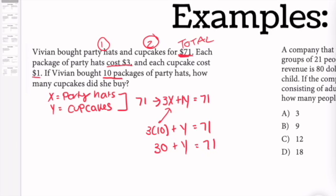How many cupcakes did she buy? Now all we have to do is solve for Y. So we're just going to subtract 30. Simple math here. We get 41. So she bought 41 cupcakes.